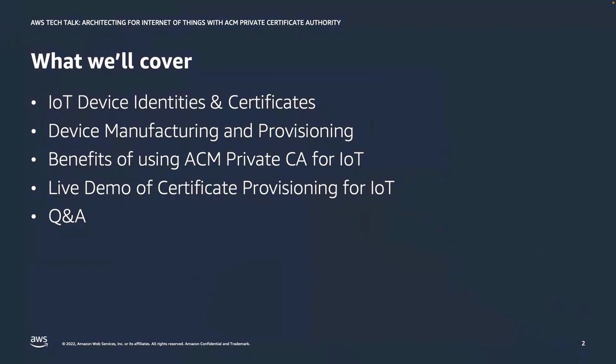Over the next hour, we'll cover a quick overview of the IoT industry and the role that certificates play for device identities and the security use cases they enable. Next, we'll walk through how certificates are provisioned in a manufacturing environment and the pros and cons of different PKI ownership models. We'll show how ACM Private CA can simplify certificate issuance, followed by a live demo. Feel free to drop questions into chat — we'll answer them before the session ends.